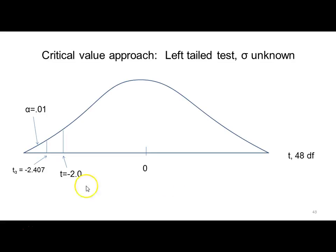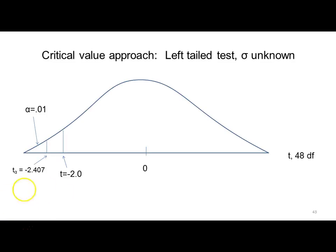Let's look at this graphically. Go to a T distribution with 48 degrees of freedom, n minus 1. With 1% alpha and a left-sided test, you want to find a critical T value, t-alpha, that leaves a 1% probability below it. You should be able to find on your table or using a calculator that that T value is negative 2.407. Our calculated T was negative 2, so we can see that our calculated T is not in the rejection area — therefore, we are unable to reject the null hypothesis.